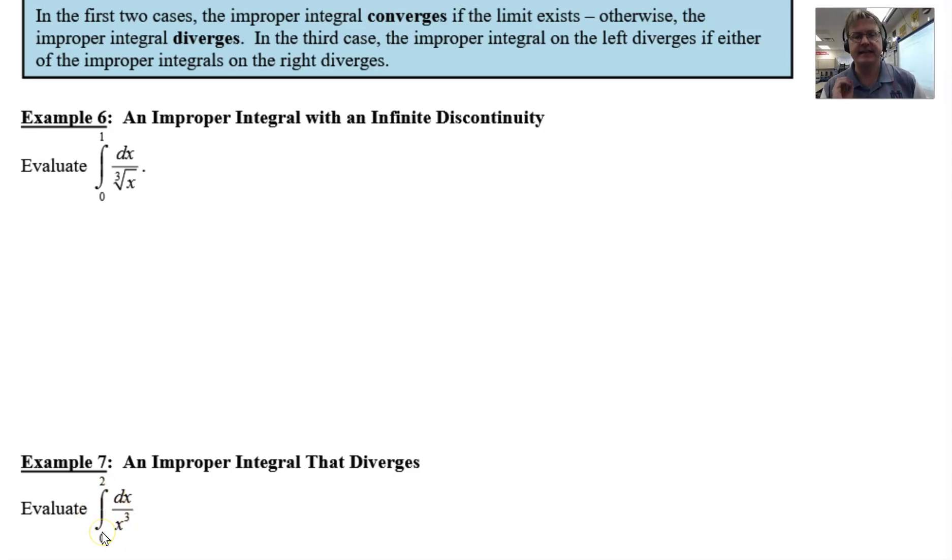Once again, like example 6, it is the 0 in that lower boundary that causes this discontinuity. By saying it's an infinite discontinuity, we're just talking about a vertical asymptote right at x equals 0, right on the y-axis.